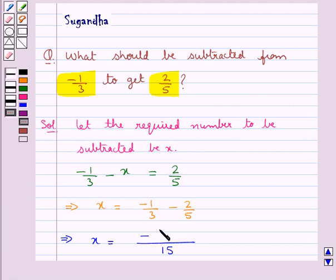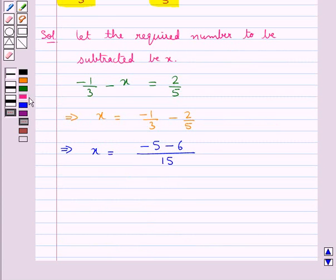So here we get in the numerator -5 - 6, and now we have x = -11/15.